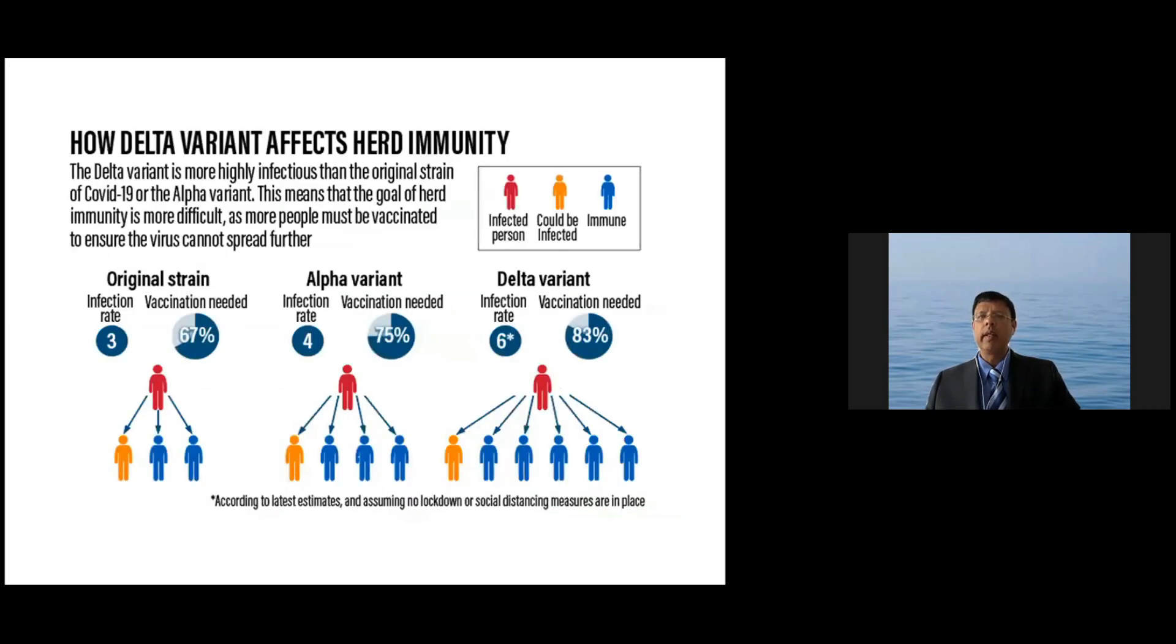So an important thing is that the delta variant is more transmissible. And this is shown clearly in the UK, where the transmission is supposed to be 60% higher than the UK variant. And the important aspect of that is, previously I've spoken about herd immunity, and about 67% of people getting immunity. But if the transmissibility is high, then you find that a higher number of people would need to be immunized and immune to get this herd immunity threshold, which I've discussed before.